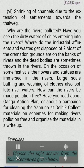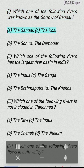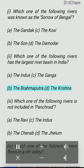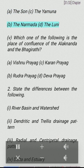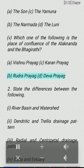Exercises: 1. Choose the right answer from the four alternatives given below. (i) Which one of the following rivers was known as the 'Sorrow of Bengal'? (a) the Gandak (b) the Kosi (c) the Son (d) the Damodar. (ii) Which river has the largest river basin in India? (a) the Indus (b) the Brahmaputra (c) the Ganga (d) the Krishna. (iii) Which river is not included in Panchnand? (a) the Ravi (b) the Chenab (c) the Indus (d) the Jhelum. (iv) Which river flows in a rift valley? (a) the Son (b) the Narmada (c) the Yamuna (d) the Luni. (v) Which is the place of confluence of the Alaknanda and the Bhagirathi? (a) Vishnuprayag (b) Rudraprayag (c) Karnaprayag (d) Devprayag.